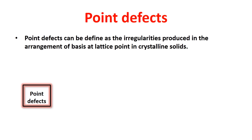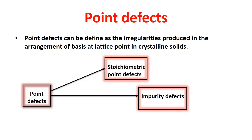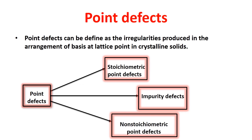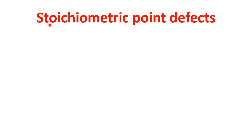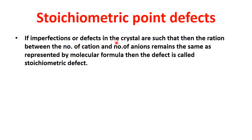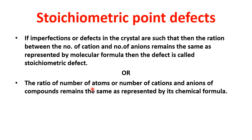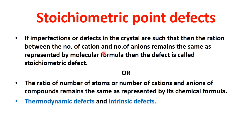Point defects can be further classified into stoichiometric point defects, impurity point defects, and non-stoichiometric point defects. Regarding stoichiometric point defects: if imperfections or defects are present in the crystal such that the ratio between the number of cations and the number of anions remains the same as represented by the molecular formula, then the defect is called a stoichiometric point defect.